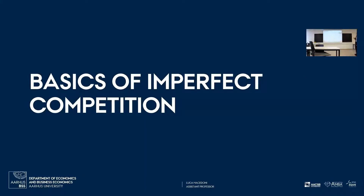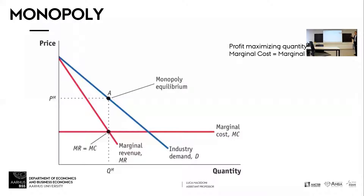Let's start with some basics of imperfect competition — this should be just a review for all of you. Let's start with the monopoly. A monopoly has a particular marginal cost curve, MC, which is horizontal, meaning your marginal costs are constant.